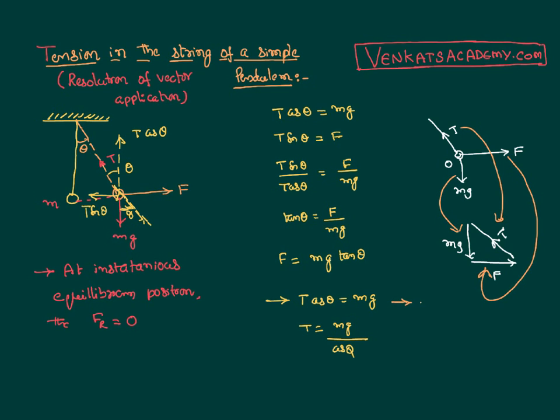As it is a triangle I can write now, T square equal to F square plus mg whole square. This is another way of finding out the tension. I can write a formula. T is nothing but square root of F square plus mg square. So there are two ways to calculate the tension. If I know the theta this is the way. If I know the F this is the way.